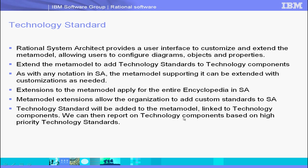The Technology Standard is a custom user-defined definition that we add to System Architect by extending the Meta Model. We add the Technology Standard so that we can later create new Technology Standards, edit existing Technology Standards, and connect our Technology Standards by making a relationship from Technology Standards to Technology Components within System Architect. This allows us to report on the Technology Standards and see the relationships between Technology Standards and Technology Artifacts in System Architect.